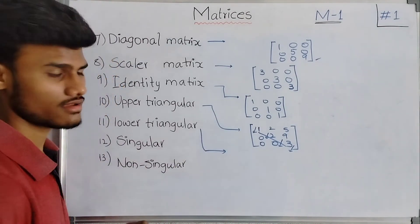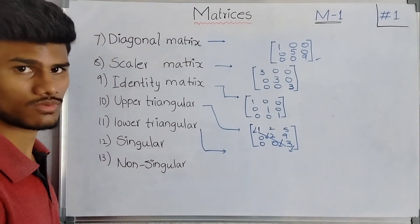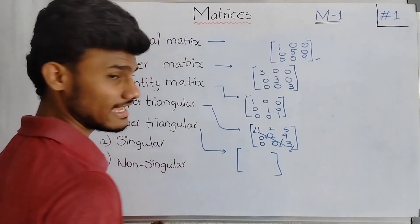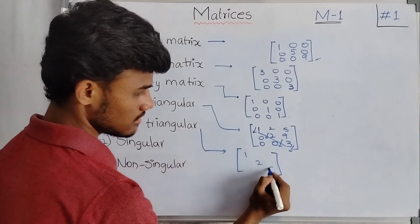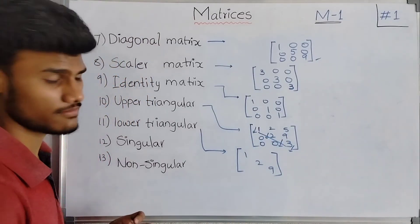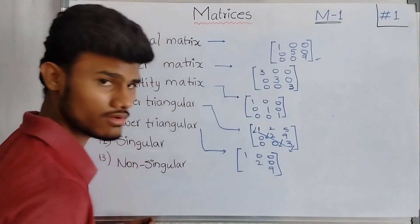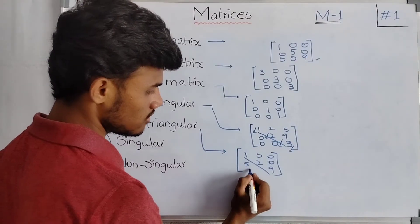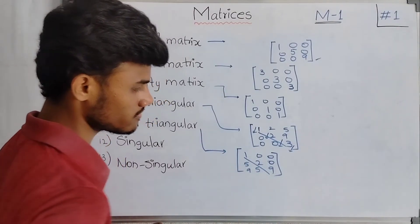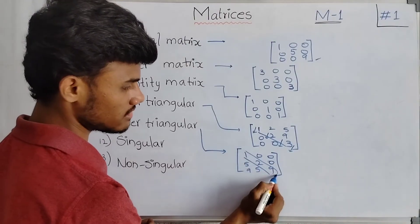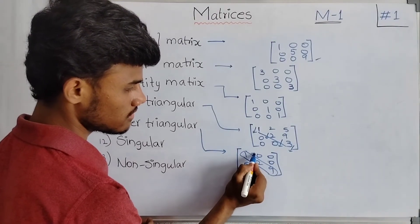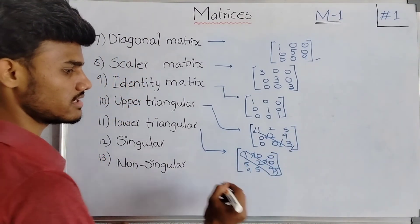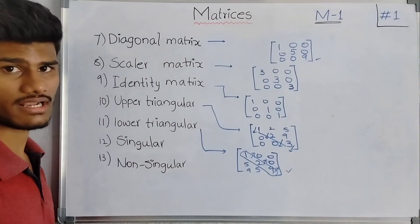Coming to lower triangular matrix — it is completely opposite to upper triangular matrix. Here, the elements above the diagonal elements are equal to 0, and the elements below the diagonal elements are not equal to 0. This type of matrix is called a lower triangular matrix.